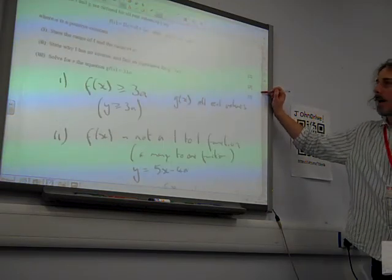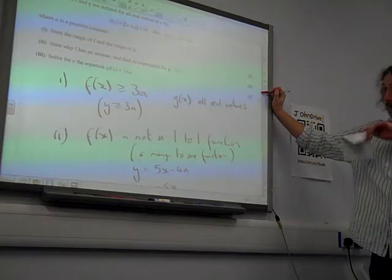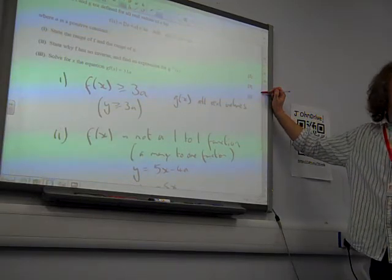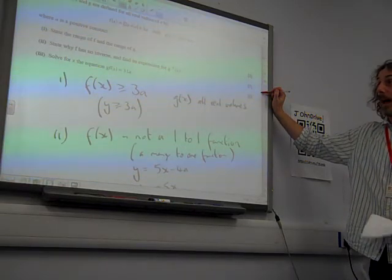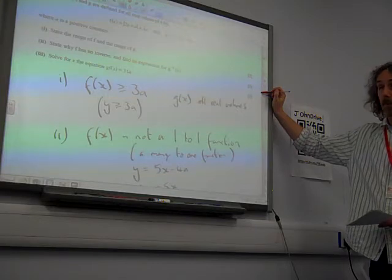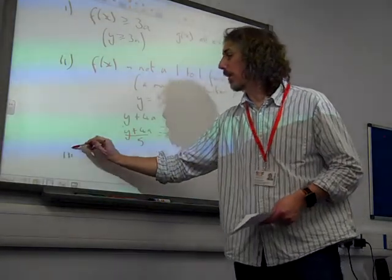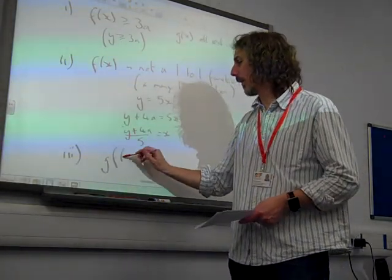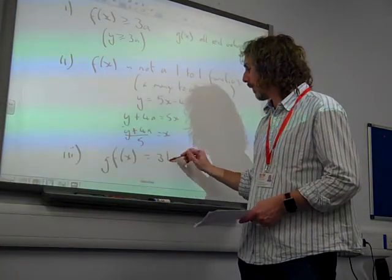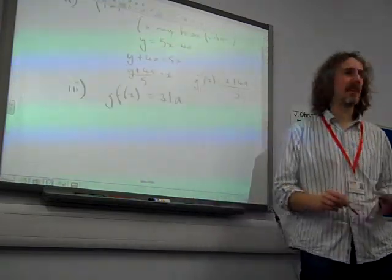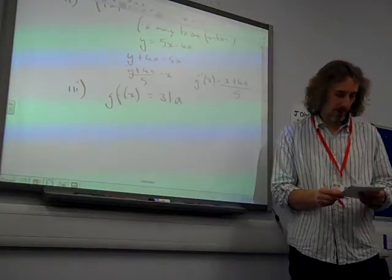Part 3. Solve. That's just five marks just for doing that. Solve for x the equation g of f of x is 31a. Now, this was quite hard because there was a lot going on here. And you just had to be really slow and deliberate and careful and do things step by step.